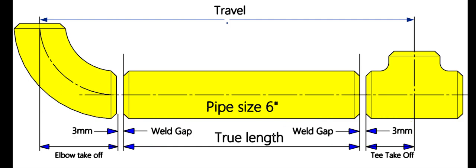The travel length is given in the drawing, and the standard weld gap is three millimeters. If the fittings are available, we can measure the takeoff physically. If you don't have the fittings, you need a pipe fittings dimensional chart like this one.